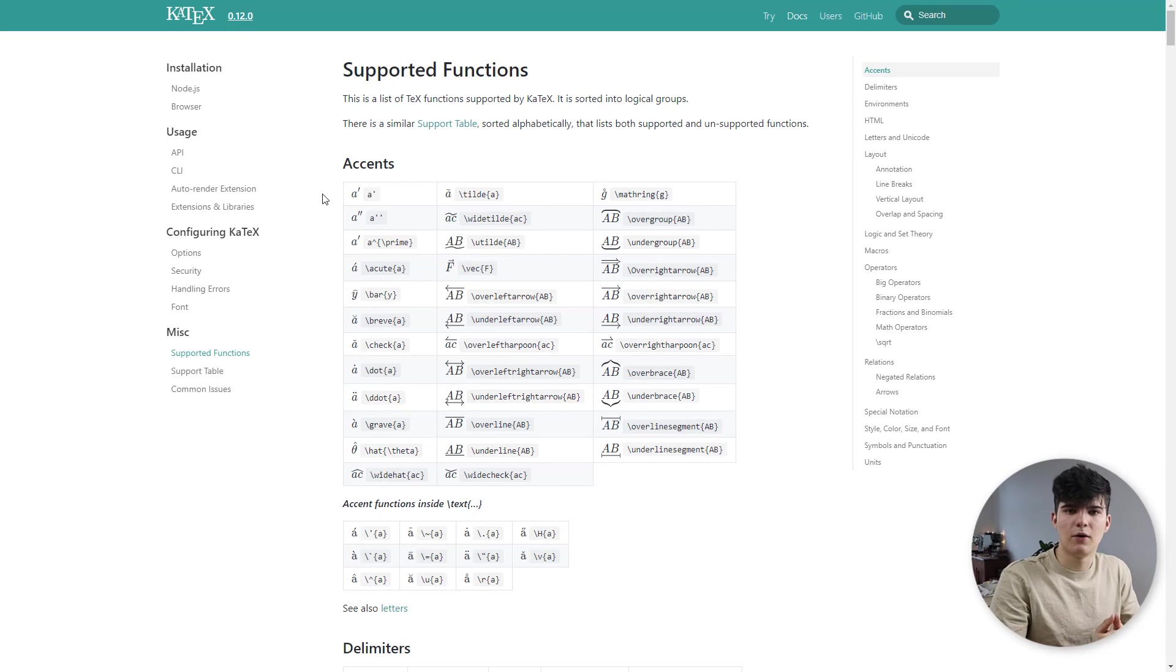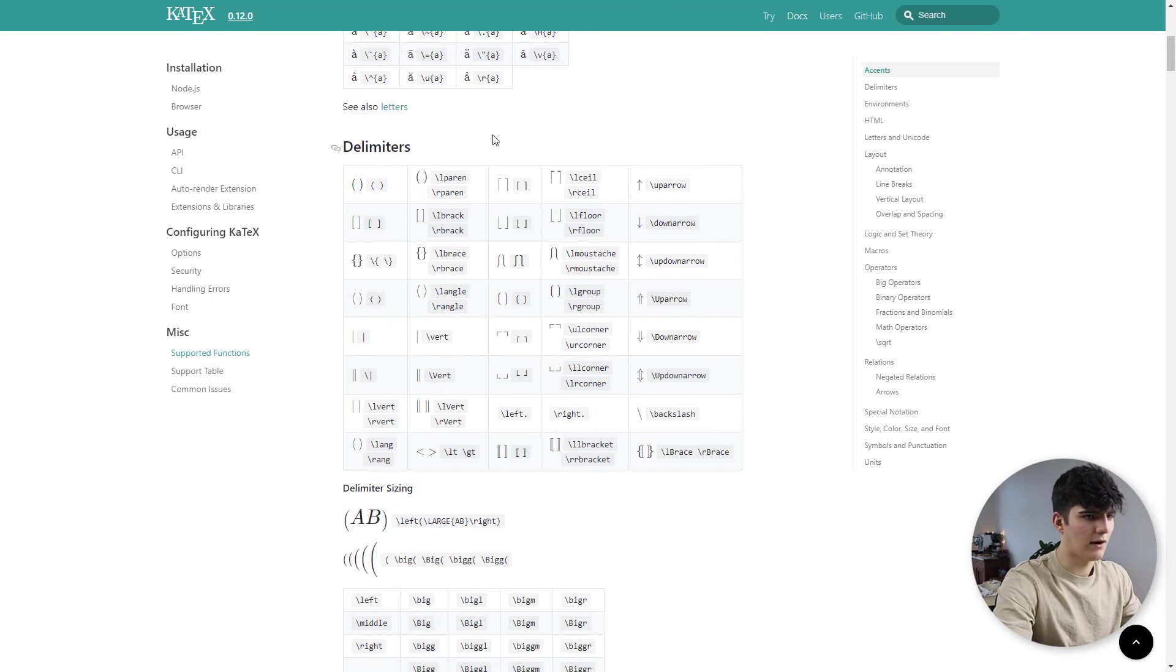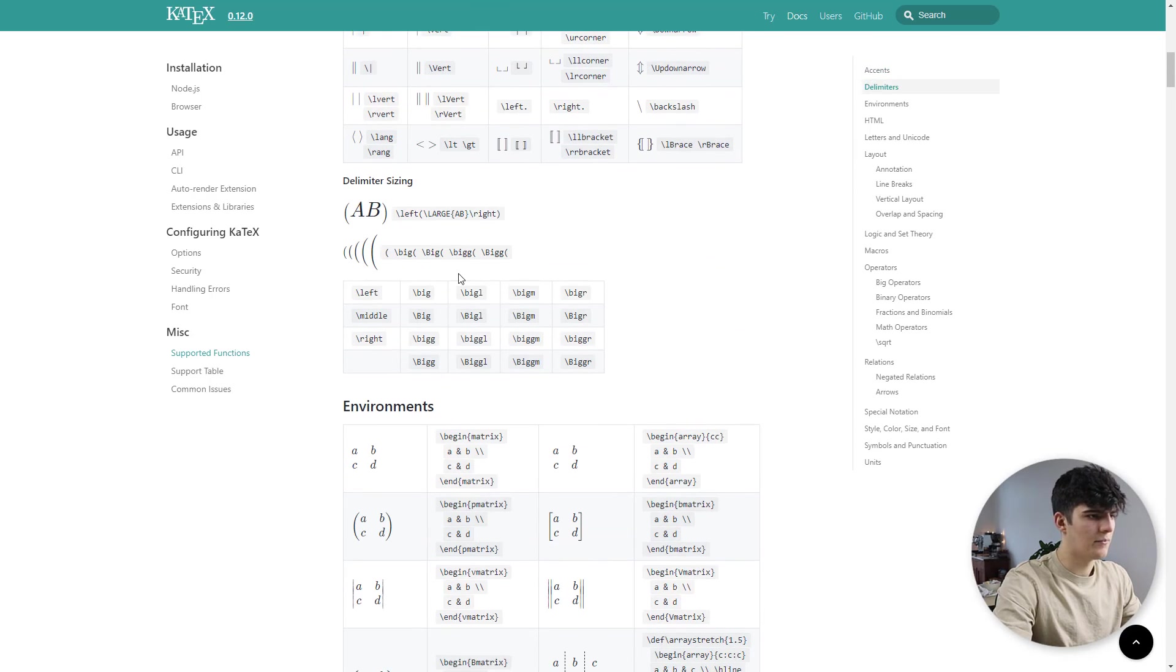That's pretty much it for math equations in Notion. I just want to show you some of the resources that will help you out with more specific symbols that you want to use. So this is the website of the KTEC library. And this is what Notion actually has implemented into their system. So these are all these symbols that you can actually use within Notion. So there's a whole bunch of them. You have all these different types of operators and relations and all of that, all these symbols. So check that out if you want an overview of all of these.